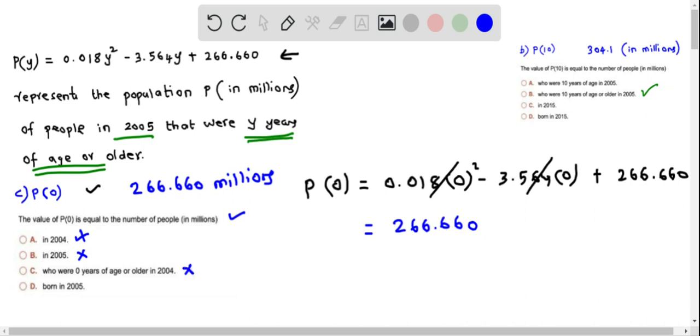Who were born in 2005, so yes. Because p of 0 means who were 0 years older which means they were actually born in 2005. So this is the correct answer for this question.